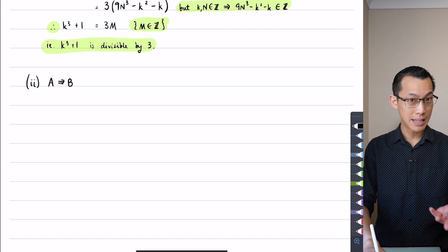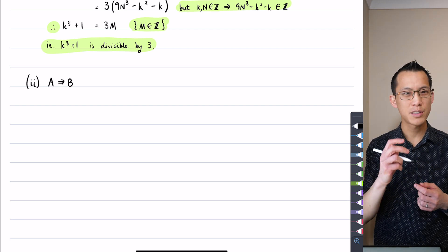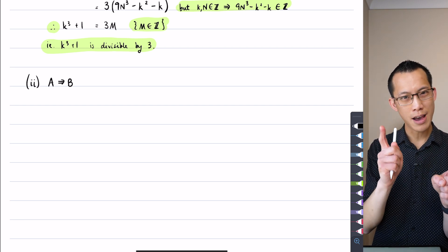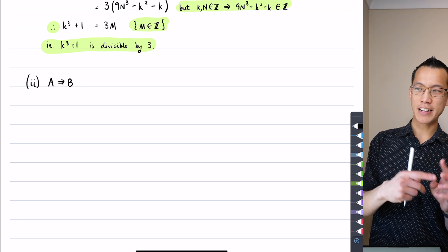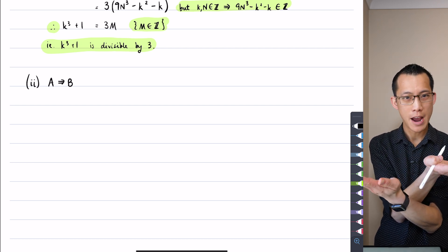So if A implies B is our original statement, then our contrapositive requires us to do two things. The contrapositive takes both your A and your B and negates them, so it's not A and not B, and then it switches the order.